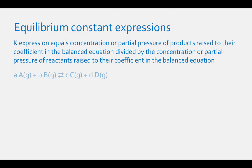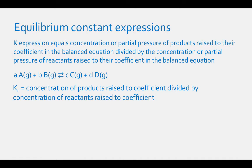For a generic reaction such as AA gas plus BB gas in equilibrium with CC gas plus DD gas, Kc equals the concentration of C raised to the power C times the concentration of D raised to the power D, divided by the concentration of A raised to the power A times the concentration of B raised to the power B.